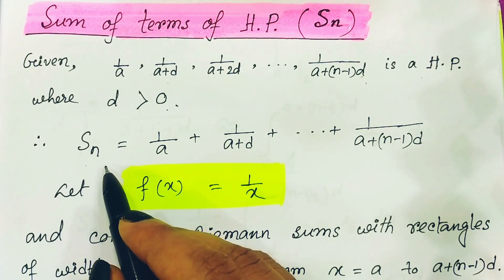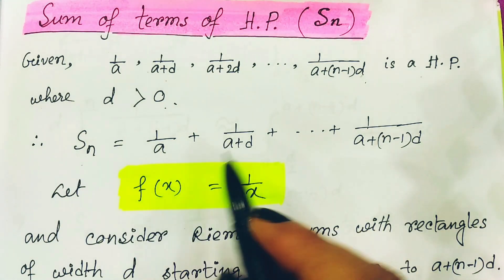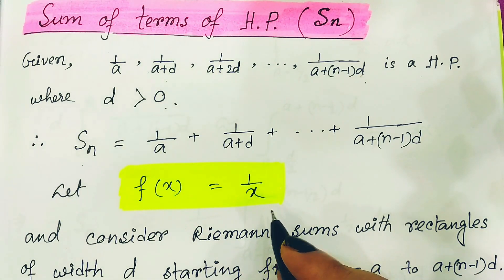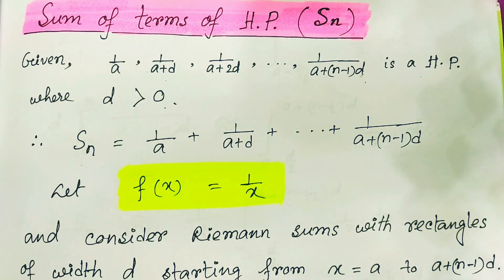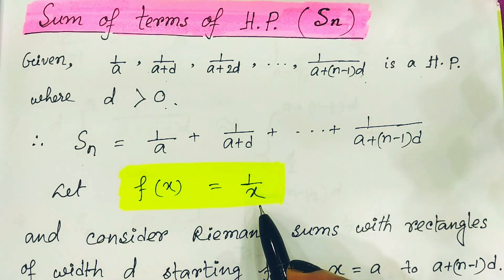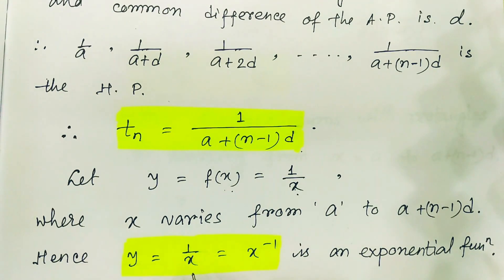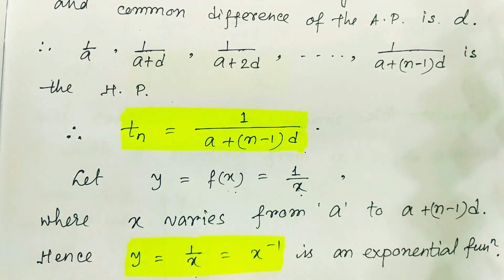Our requirement is Sn, so Sn equals 1/a + 1/(a+d) and so on. The general term Tn can be expressed using f(x) = 1/x, as we learned from our previous video where I explained how any AP, GP, or HP can be represented in a geometrical or functional way. So if we represent the HP series in the form f(x) = 1/x, then Tn = 1/(a + (n-1)d).